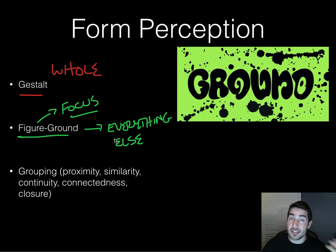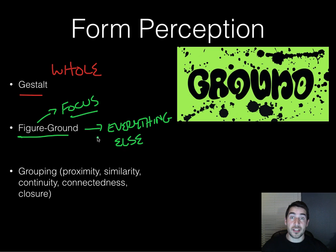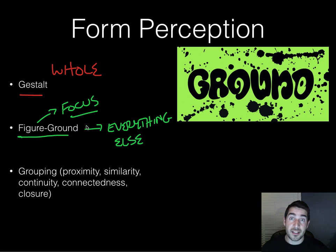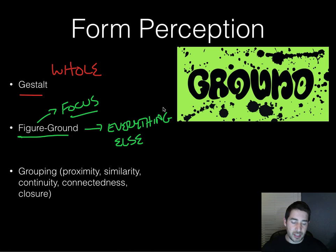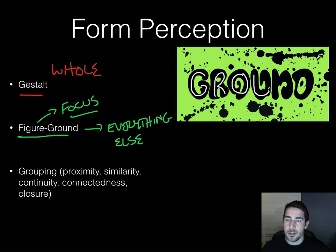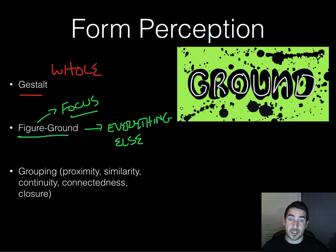With vision, if somebody's taking a selfie by the beach, the person would probably be the figure — especially if there's a face in it, because human beings like to recognize faces — and the surrounding background would be the ground. But if you're focusing on the waves in the ocean, the ocean becomes the figure and everything else becomes the ground. Here's a neat example: if you look at this image, most people might see 'GROUND' first — the letters become the figure and everything else becomes the ground.